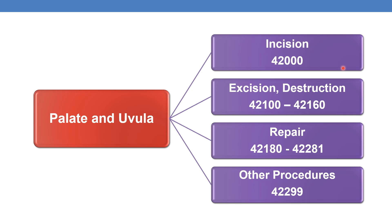There is only one CPT under incision: 42000. For excision and destruction, CPTs are in the range 42100 to 42160. For repair, the CPTs range from 42180 to 42281. And for other procedures, there is only one CPT: 42299.